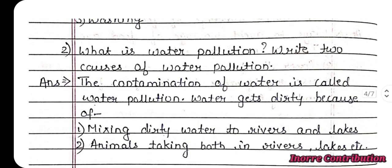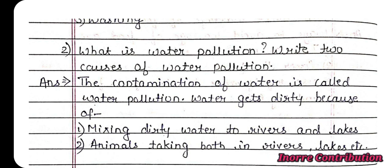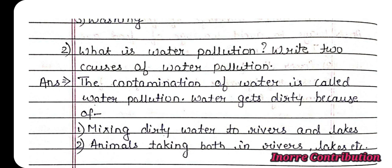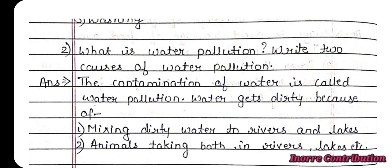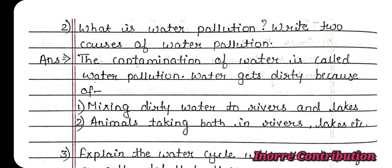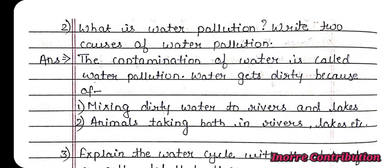Second question: What is water pollution? Write two causes of water pollution. Answer — the contamination of water is called water pollution. Water gets dirty because of mixing dirty water into rivers and lakes, and animals taking baths in rivers, lakes, etc.